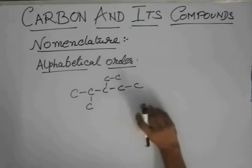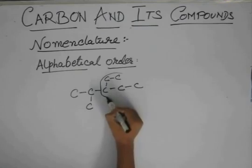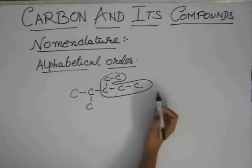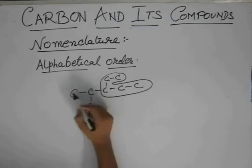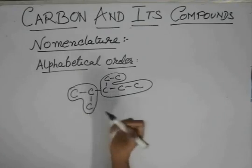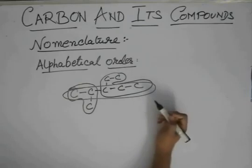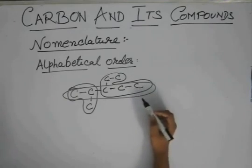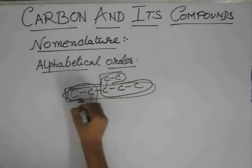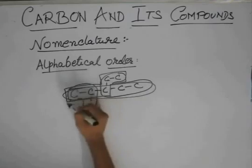So first of all, what we do, we select the longest chain. So this is one chain of five carbon atoms. This is one chain of one, two, three carbon atoms. And this is one chain again. And again, you see, this thing is also a chain. And these are all the same chains.